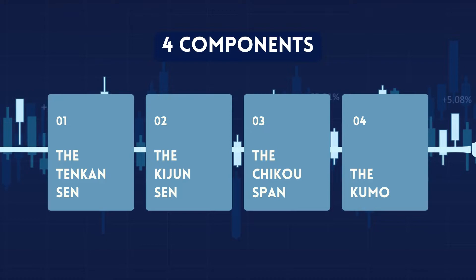Senku Span A is calculated by adding Tenkan Sen and Kishu Sen and then dividing by two, shifted forward 26 periods. Senku Span B represents the highest high plus lowest low divided by two for the last 52 periods, also shifted 26 periods into the future.